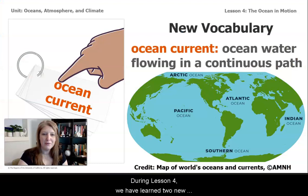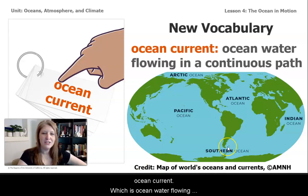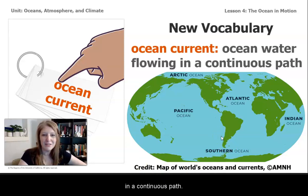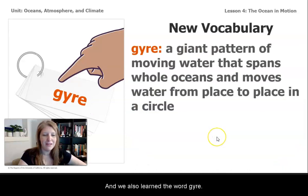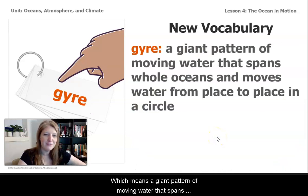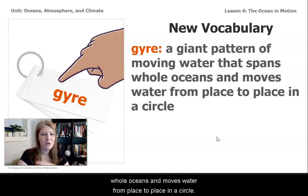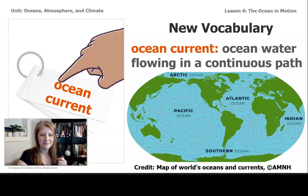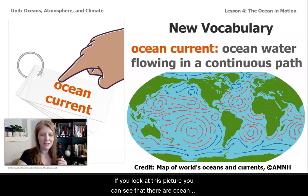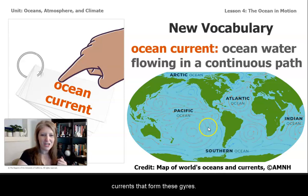During Lesson 4, we have learned two new vocabulary words. We learned the word ocean current, which is ocean water flowing in a continuous path. And we also learned the word gyre, which means a giant pattern of moving water that spans whole oceans and moves water from place to place in a circle. If you look at this picture, you can see that there are ocean currents that form these gyres. It's pretty spectacular stuff.